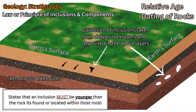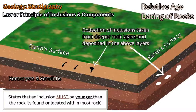Charles Lyell was investigating rock layers and formulating his principles for his Principles of Geology book. He was noticing that there were smaller rocks found within a larger rock, called a host rock. These small rocks found inside the larger rocks were called inclusions. His principle explains how these inclusions came to be in the larger rock — how they're found there and what process caused them to be in this larger rock.